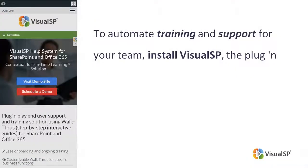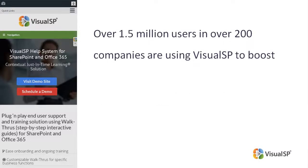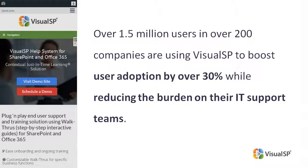To automate training and support for your team, install Visual SP — the plug-and-play, instant, and contextual self-help system for SharePoint and Office 365. Over 1.5 million users and over 200 companies are using Visual SP to boost user adoption by over 30% while reducing the burden on their IT support teams.